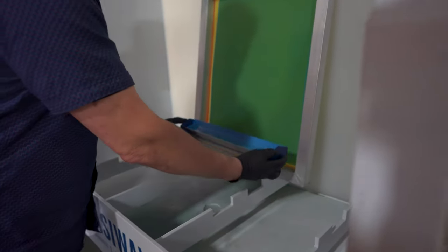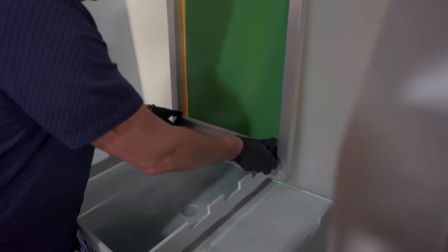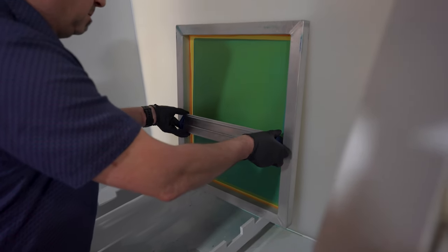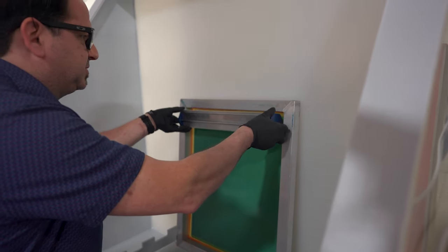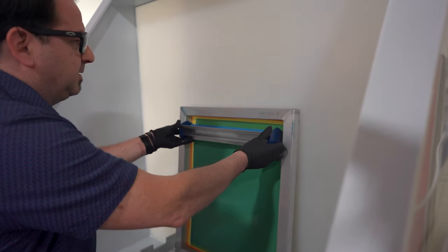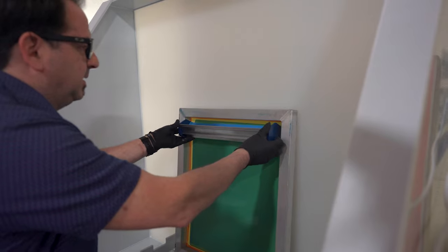Repeat that process the same on the inside of the screen. Making sure to stop just shy of the top, let the emulsion flow back in and then scrape it off.